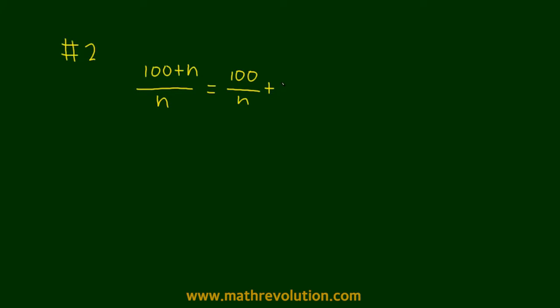as 100/n + 1, and this should not be an integer. That's what this question is saying. In other words, 100/n should not be an integer.